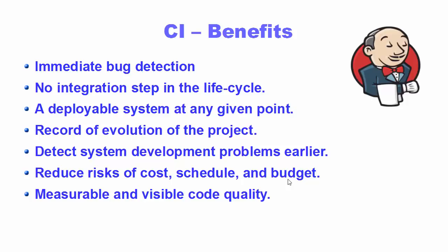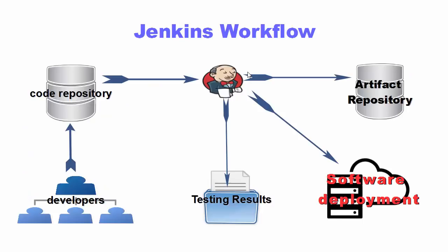As a result of detecting problems early, you have reduced risks in terms of cost, schedule, and budget. When you detect a problem earlier, you are obviously going to save on cost, time, and budget. The last benefit is measurable and visible code quality — using Jenkins or any other CI system, you will be able to visibly see the code quality of your project.